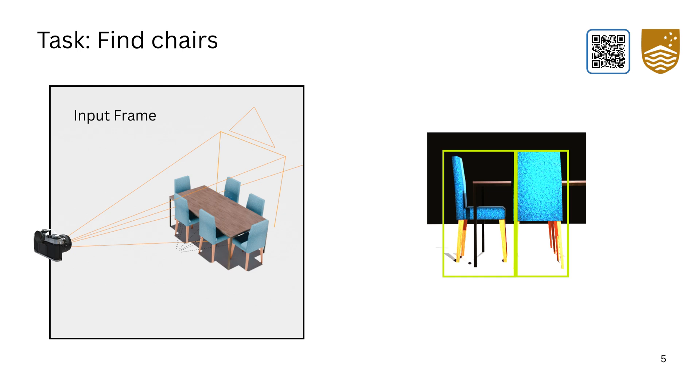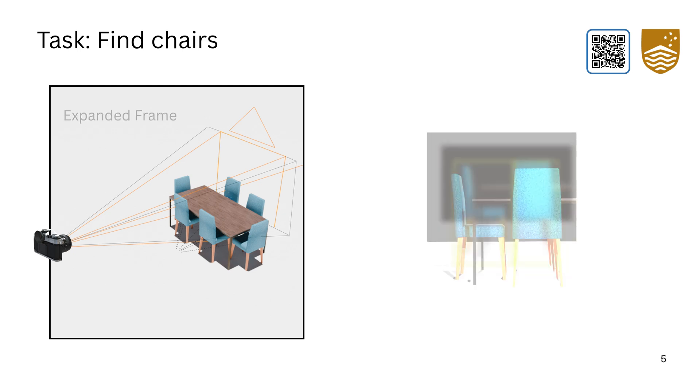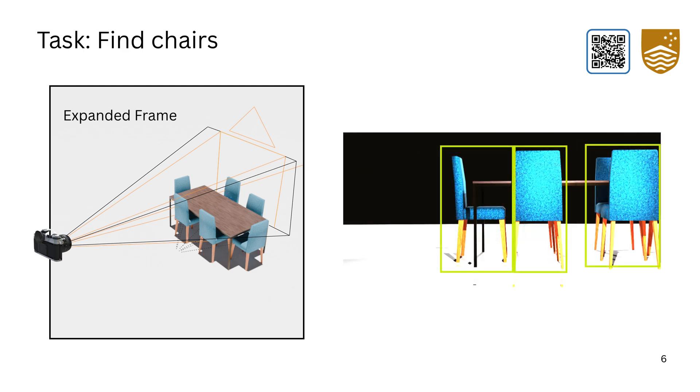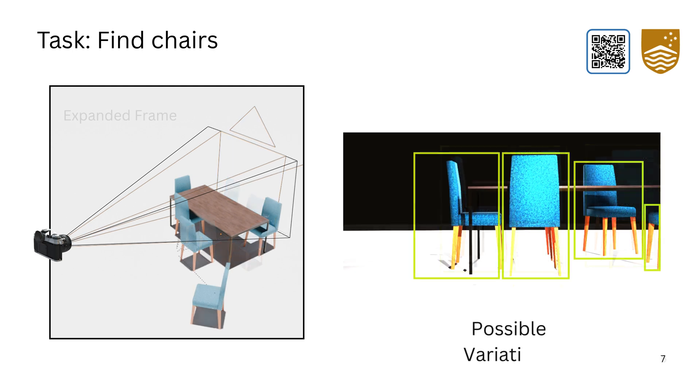Consider the case of locating chairs indoors. An object detector finds visible ones but misses those occluded or out of frame. And that is our focus, inferring either an expanded view or the nearby 3D scene in the vicinity of the camera.